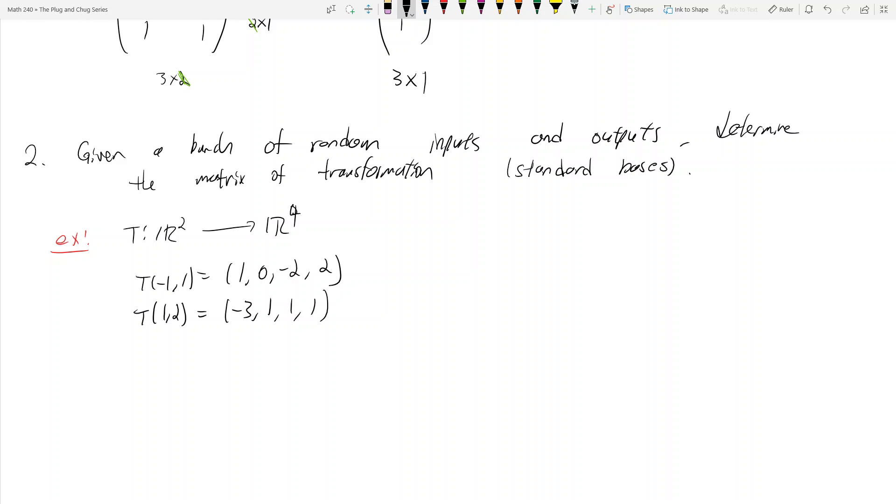And so, okay, cool. They give you two random inputs and these two random inputs are in R², right? And then they give you two random outputs that are in R⁴. So what do we know about T? Well, from above, we know that T is going to be a 4 by 2 matrix, right? So that much we know. T is going to be a 4 by 2 matrix, and that's simply because your input vector space is dimension 2 and your output vector space is dimension 4.